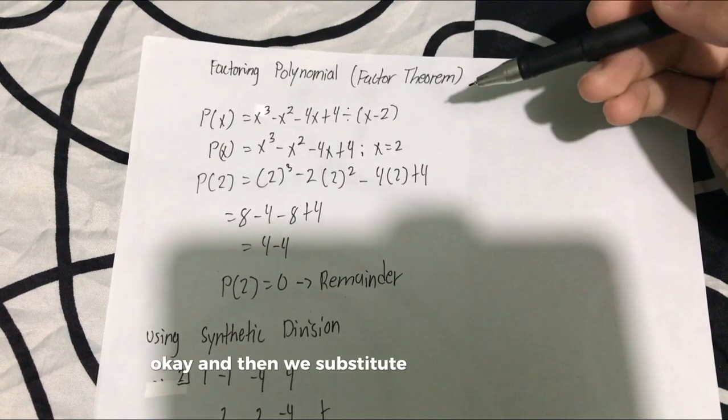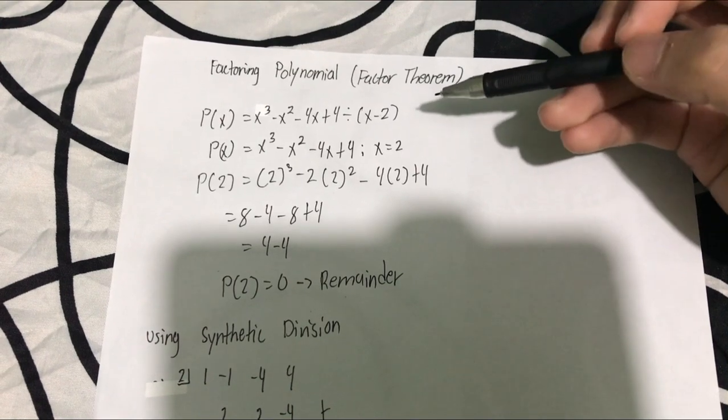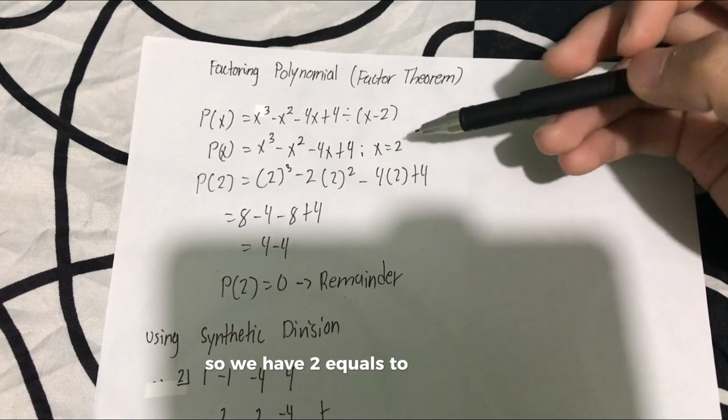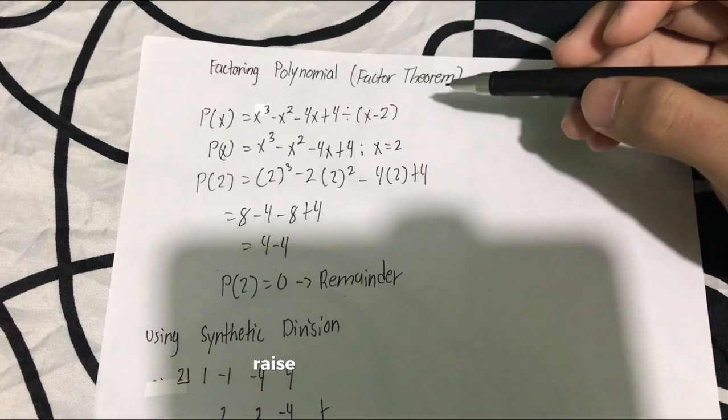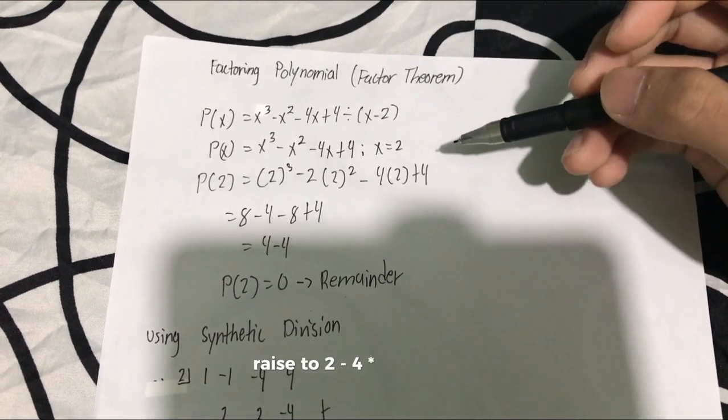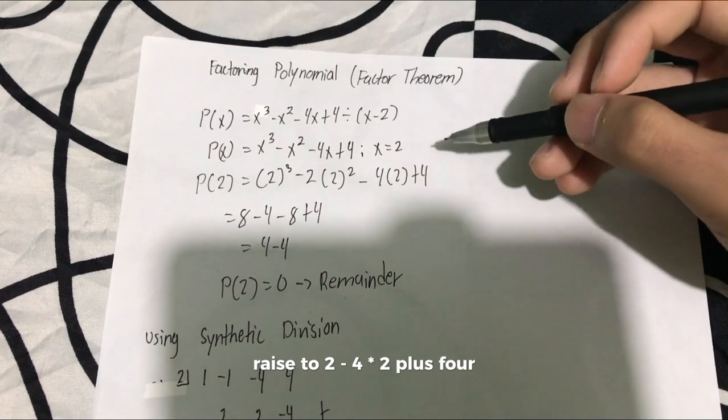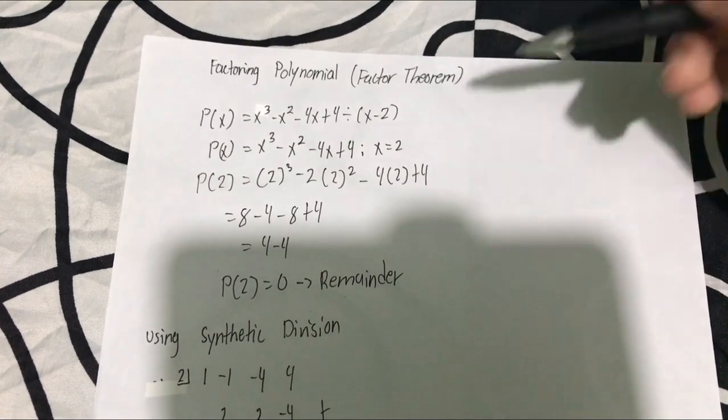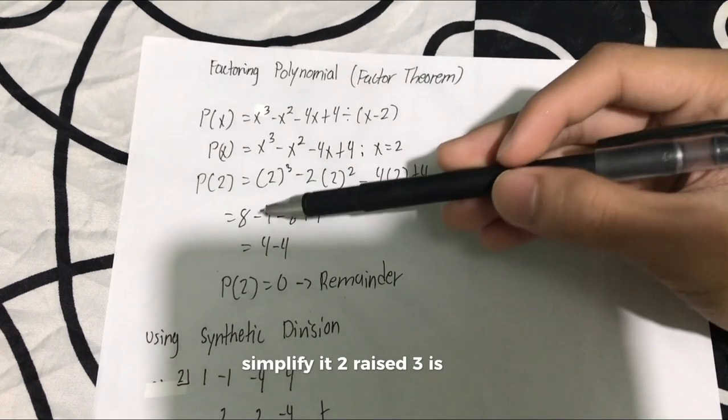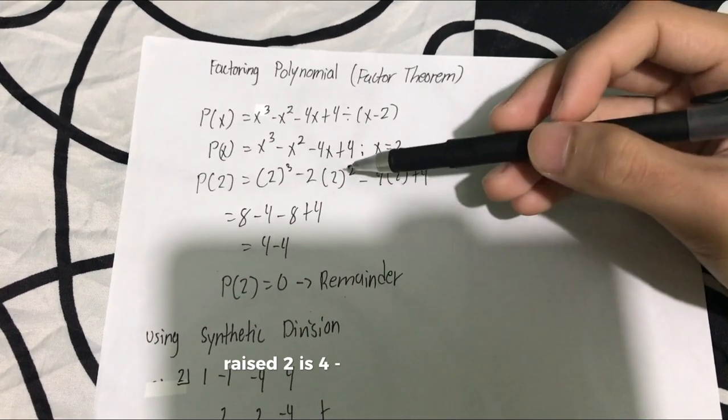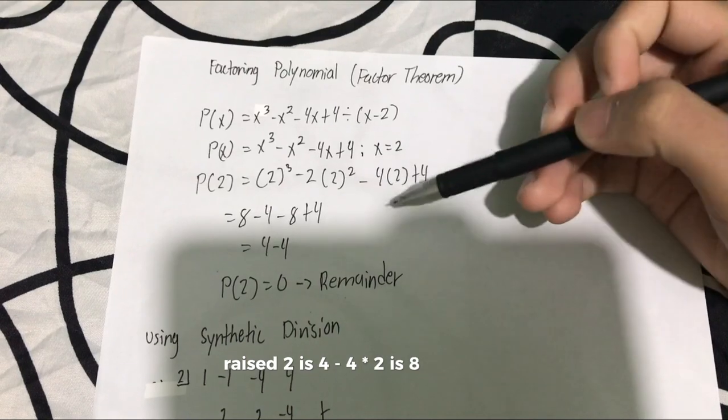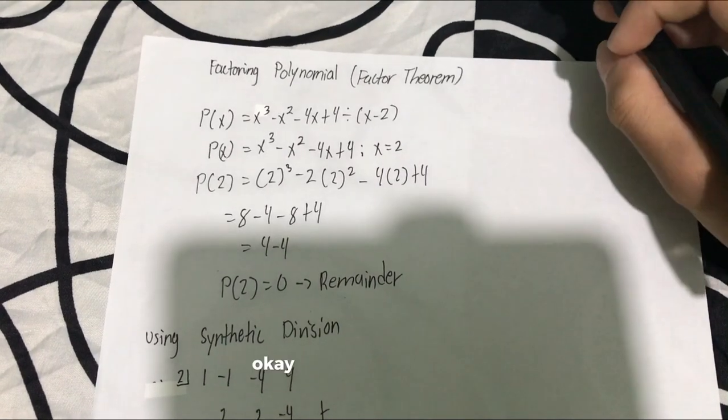And then we substitute the value of x. So we have P of 2 equals 2 raised to 3 minus 2 raised to 2 minus 4 times 2 plus 4. Simplifying it: 2 raised to 3 is 8 minus 2 raised to 2 is 4 minus 4 times 2 is 8 plus 4.